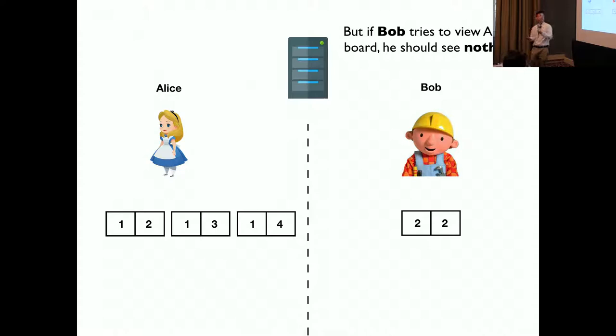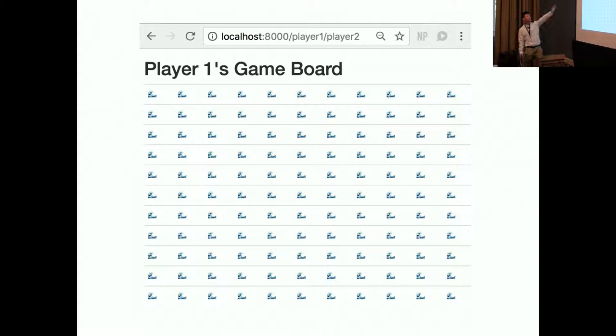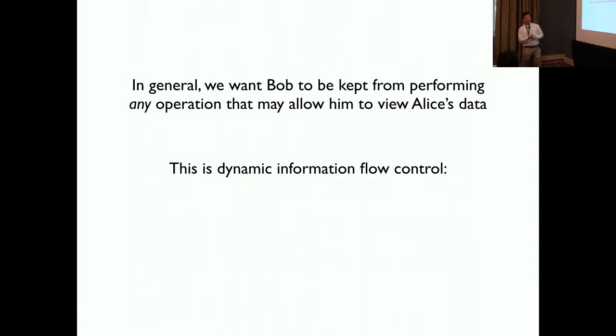But if Bob tries to see Alice's board, he cannot. The web server checks the identity and checks that Bob is not Alice. So he cannot get access to Alice's board. As we can see, player two is Bob, and he's trying to see player one, Alice's board. He's seeing nothing, an empty board.